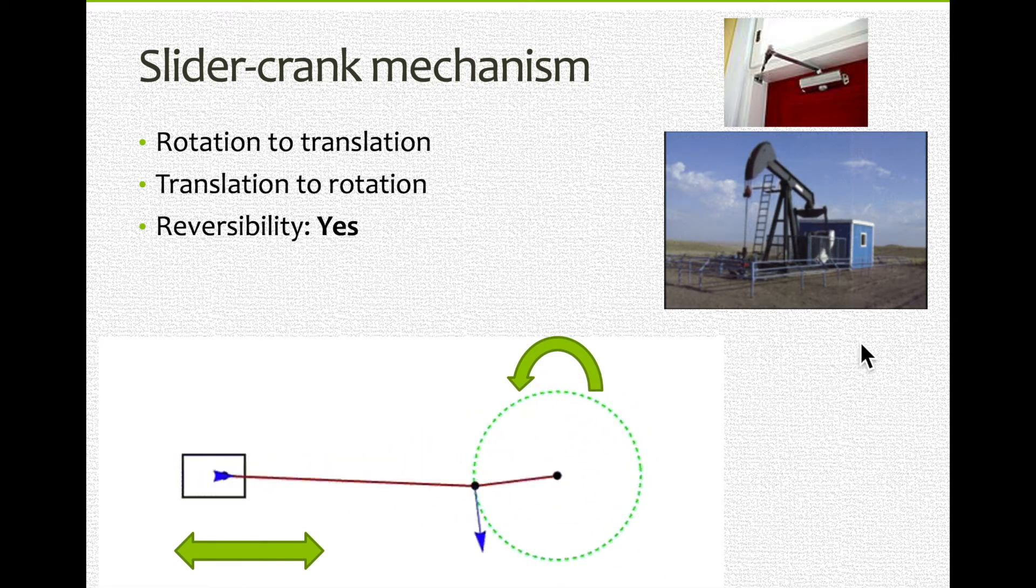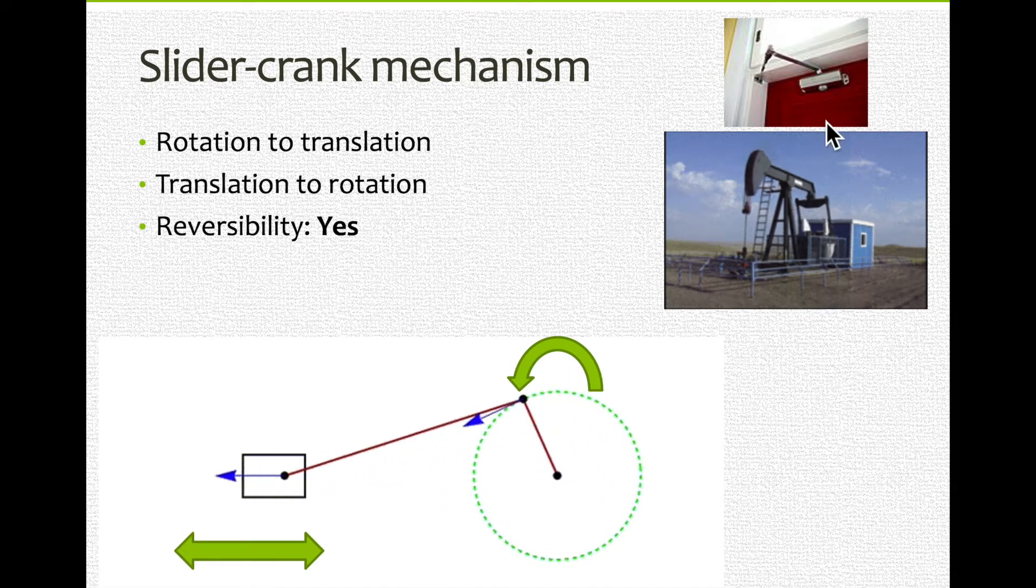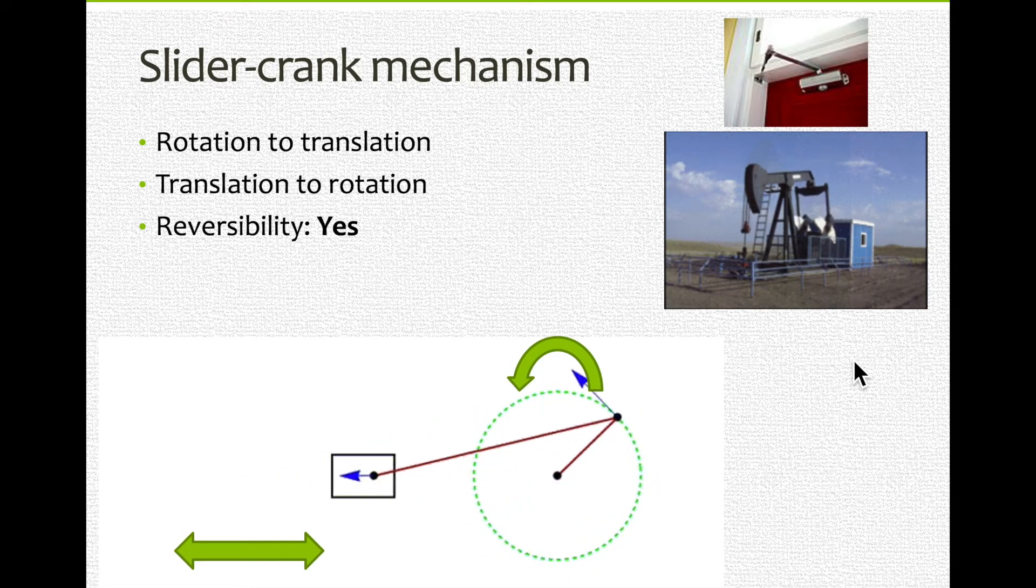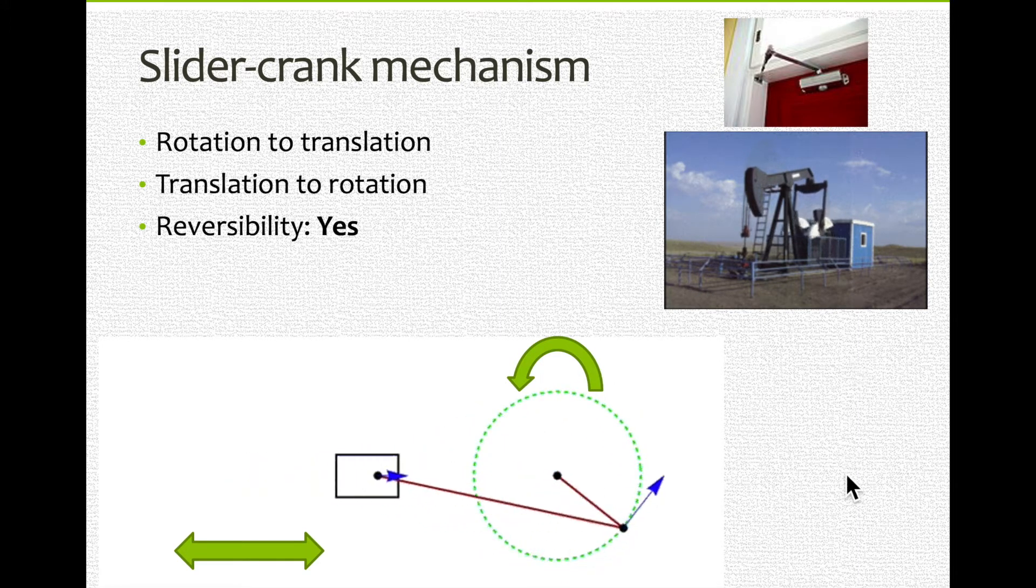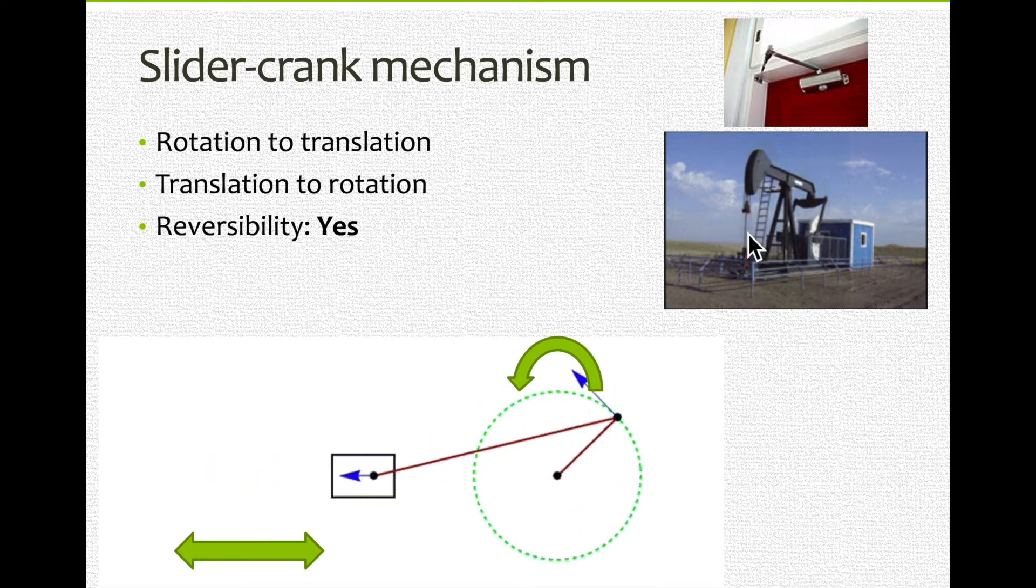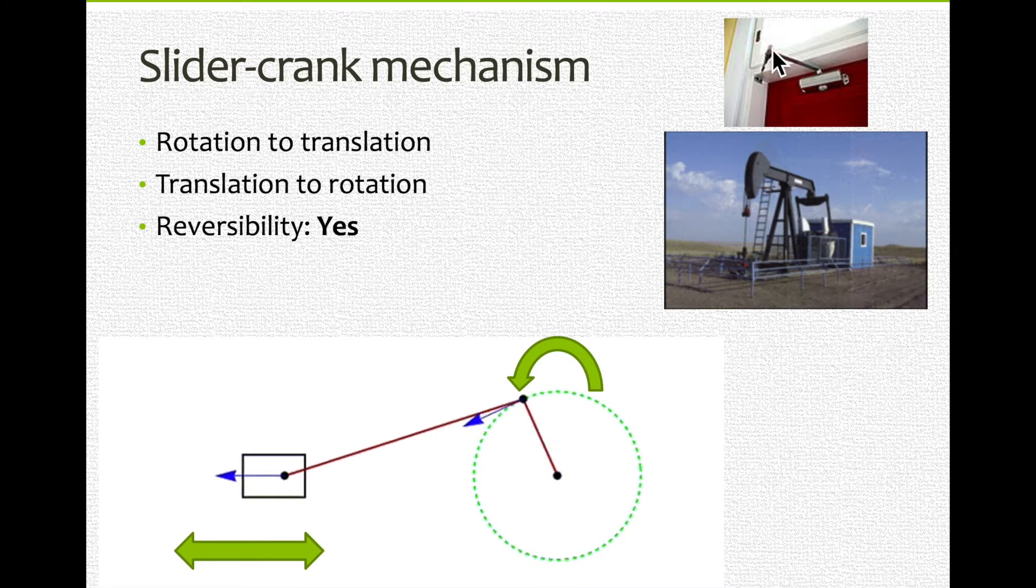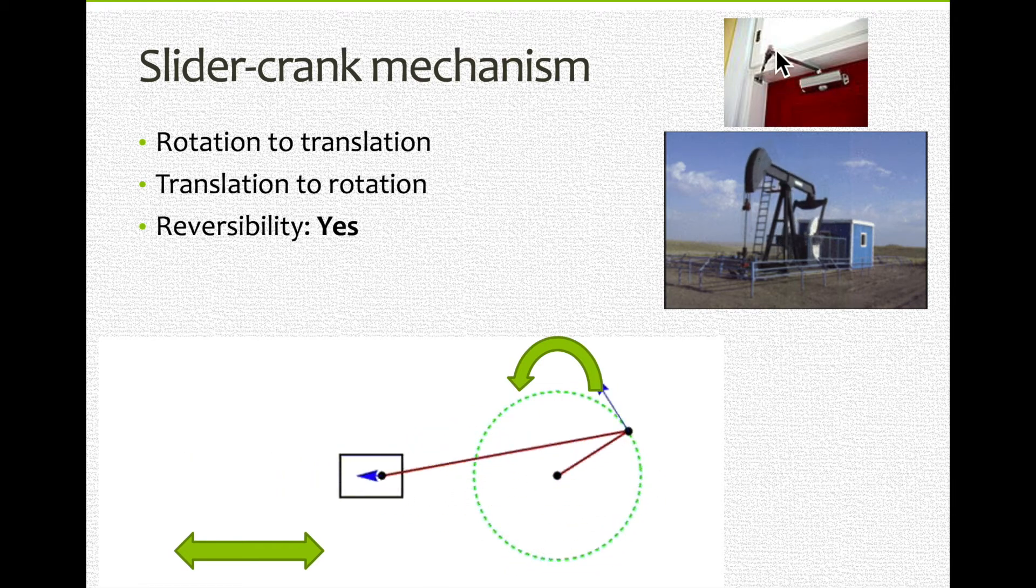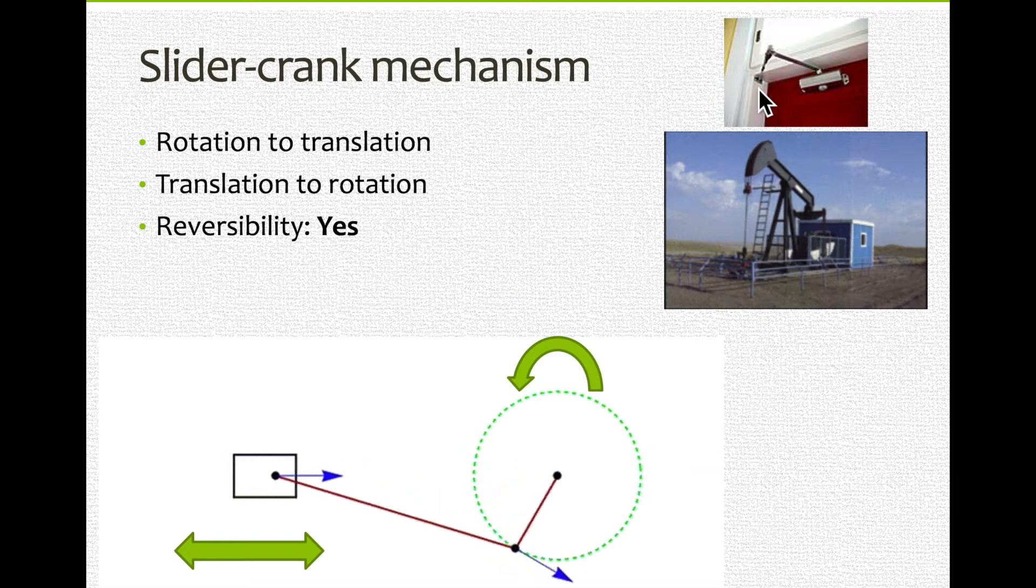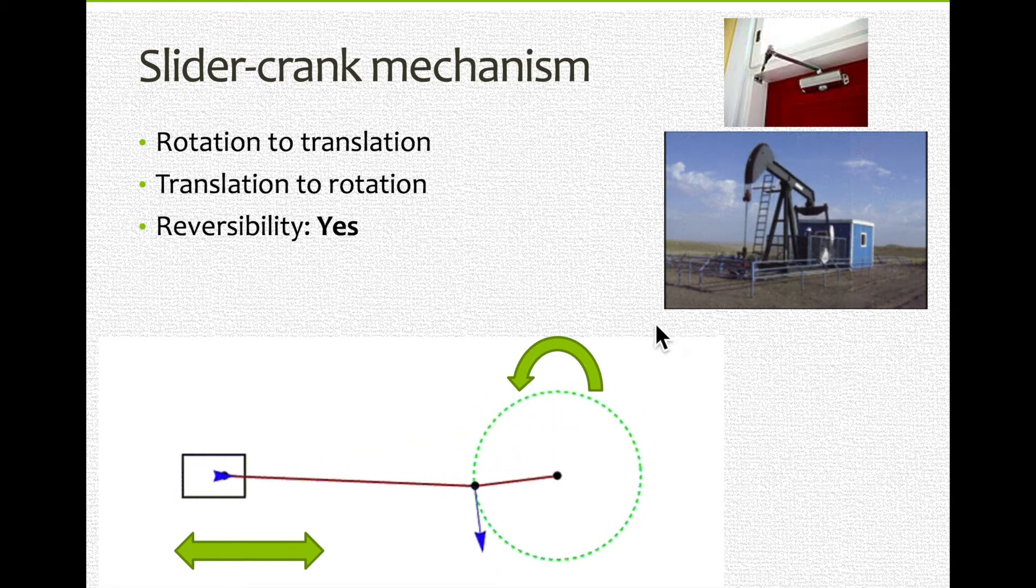Actual examples, real life examples. Here you have a system that is involved in getting oil outside of the ground. You can see this is translating while this is rotating. A door. At school you might have doors that look like these, commercial doors.